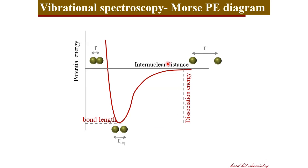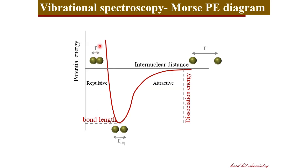So the Morse potential energy diagram can tell you the equilibrium bond length and the dissociation energy of a chemical bond. The right side of the curve involves the attractive forces between the two atoms, where there is a decrease in energy with more and more attraction, and the left side is dominated by the repulsive interaction — when you bring the atoms together, the repulsive interactions dominate to give a high energy.